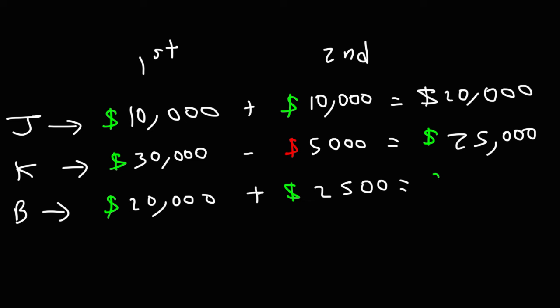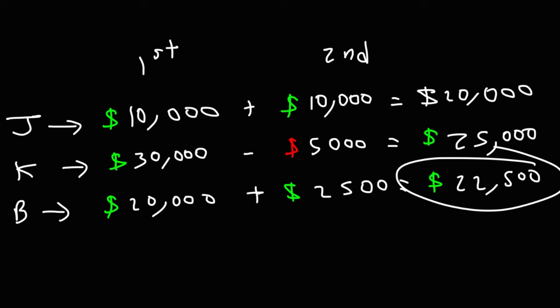Bruce didn't do that bad — in both cases he made a decent profit. Kelly made the greatest total profit because she hit a home run on the first one, though that doesn't always happen. So I'll let you decide which option is better: sell all your shares if the price doubles, let your winners run like Kelly, or sell half your shares when the price doubles and then sell the remainder if it continues to climb?